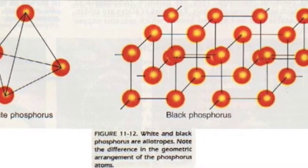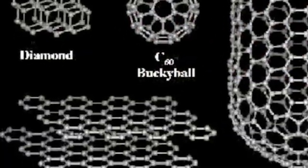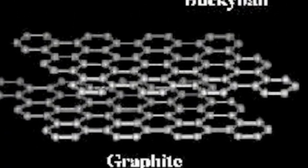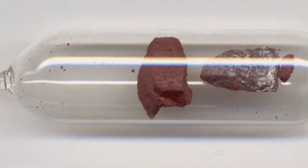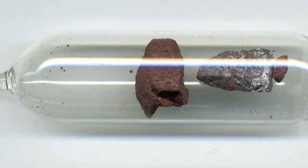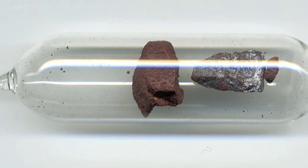Phosphorus is found in different allotropes, just as carbon is found as graphite, diamonds, and other forms. Allotropes are different forms of the same element, bonded in different ways. There are two main allotropes of phosphorus: white phosphorus and red phosphorus. Other allotropes including scarlet, violet, and black rarely occur naturally and are usually synthetically produced.